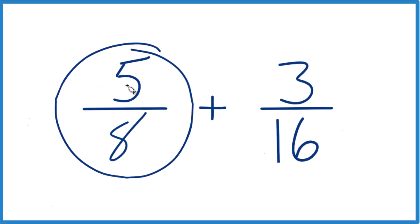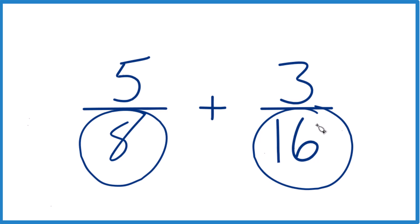If you need to add the fractions 5 eighths plus 3 sixteenths, here's how you do it. We want to get the denominators to be the same, get a common denominator. That way we can just add the numerators together, bring the denominator across, and we're done.